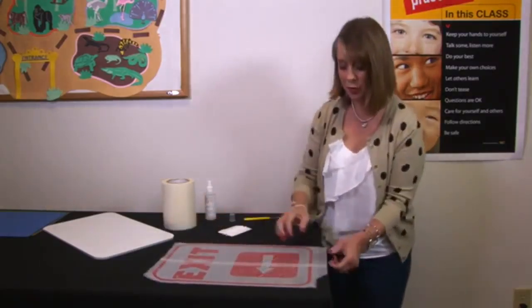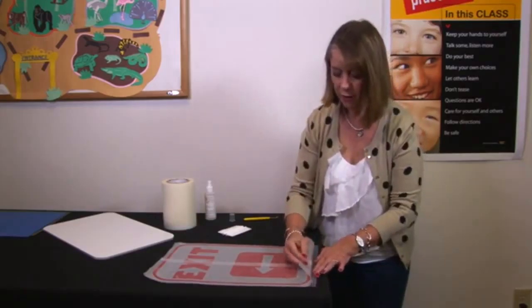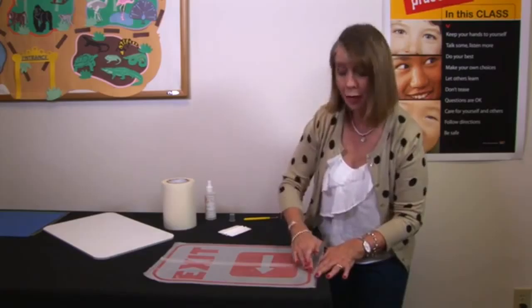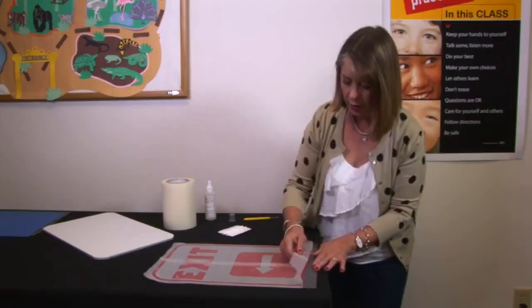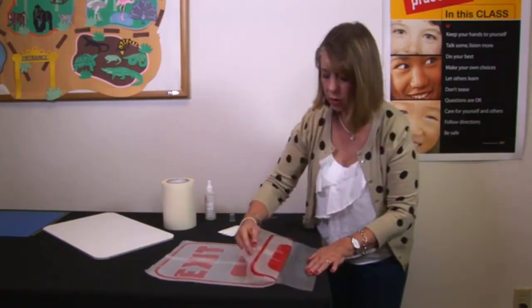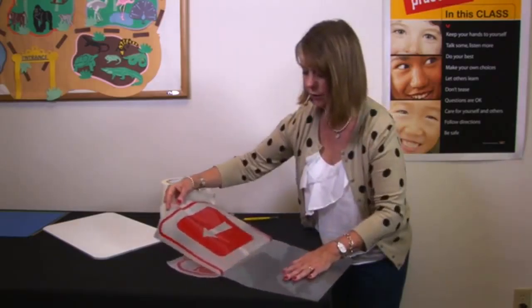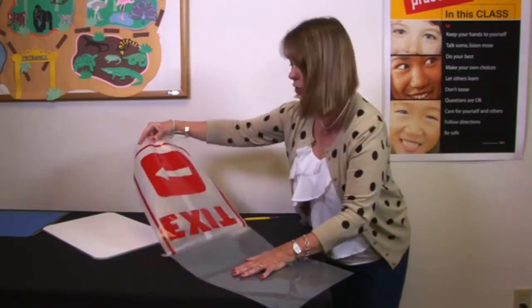Once you're done with the squeegee, proceed to lift the transfer tape off the backing and make sure that you're lifting the vinyl along with it. You may need to reinforce certain areas with your finger but it's just a nice fluid motion as you lift it off the backing of the sheet of vinyl. You can see how it's lifting successfully onto my transfer tape.